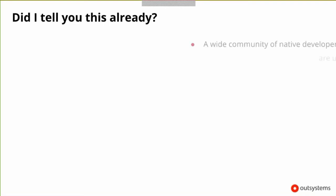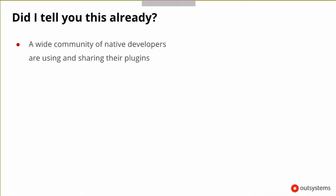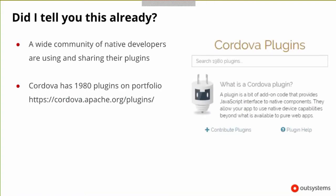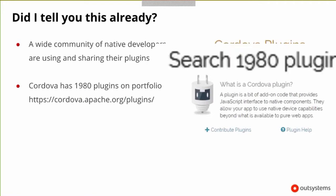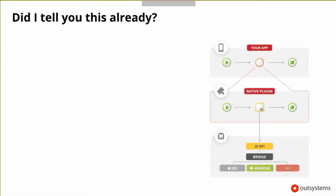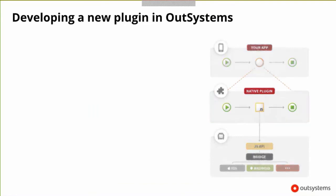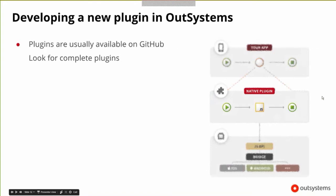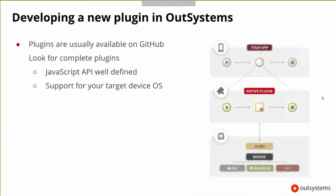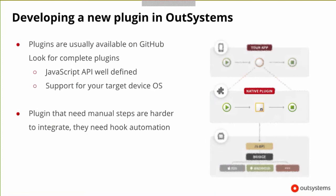We have a wide community of native developers using and sharing their plugins. Currently Cordova has on its website 1,980 plugins — that's a lot of plugins and we need to leverage them. How do we develop a new plugin in OutSystems? Plugins are usually available on GitHub. Look for complete plugins with well-defined JavaScript APIs. Check if the plugin supports your target device — some are iOS only, some Android only. Plugins that need manual steps are harder to integrate and require hook automation.